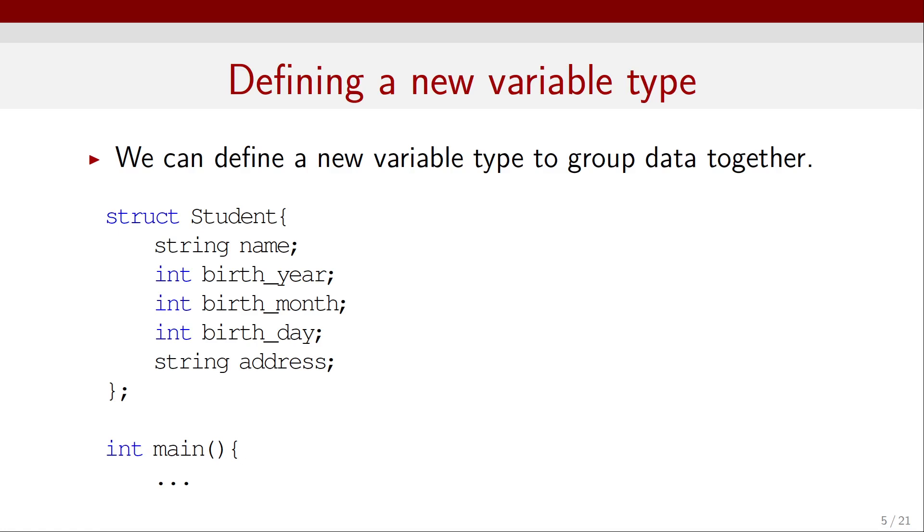To solve this problem, we are going to define a new type of variable. This will allow us to group data together. So, we declare a struct or a structure, and we call it Student. And to define it, we use curly braces, as we did for defining functions.